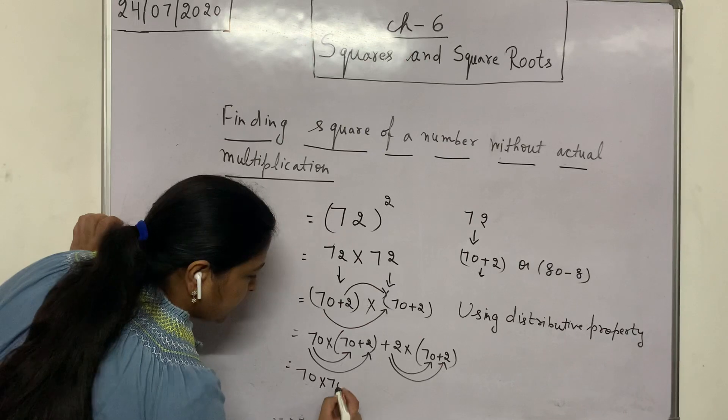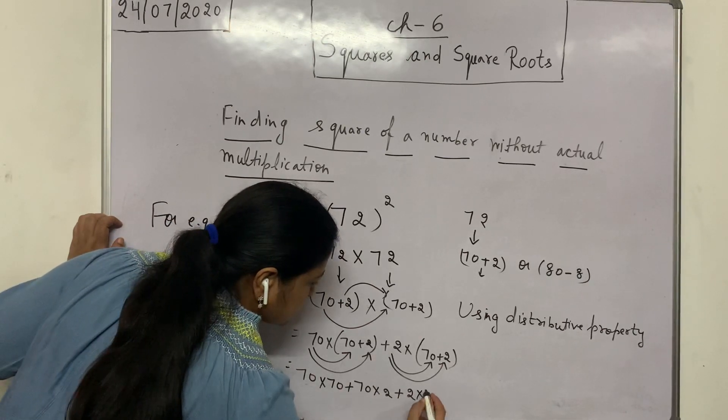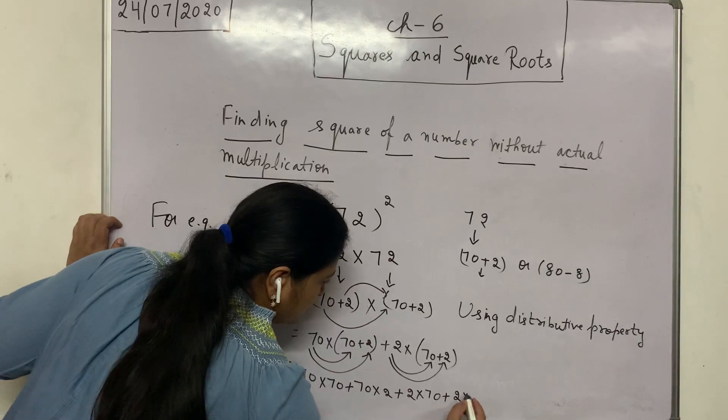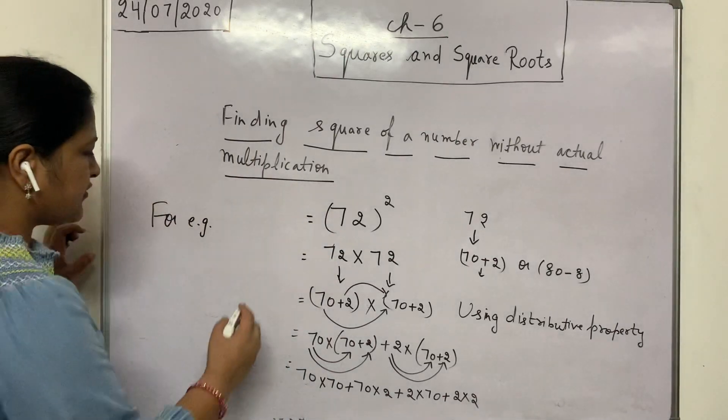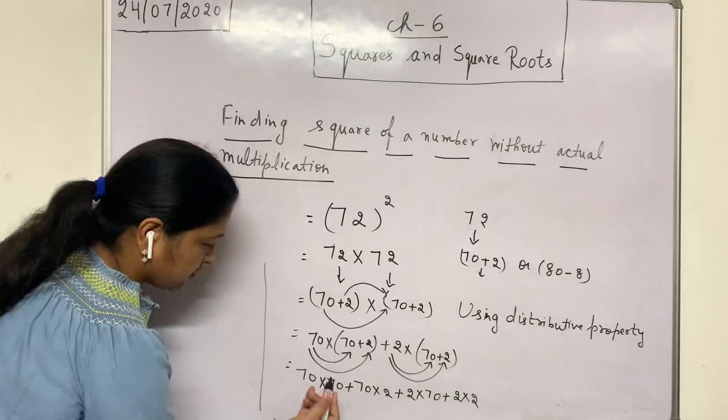70 into 70 plus 70 into 2 plus 2 into 70 plus 2 into 2. Actually, what is the benefit of this method? We work with the tens, which are easy to calculate.